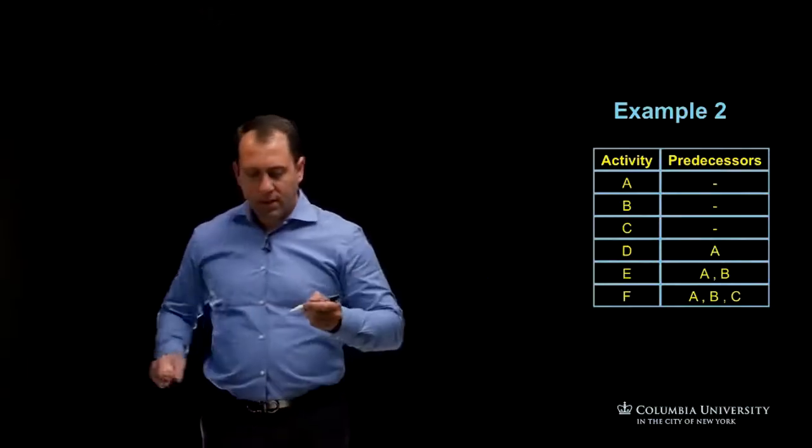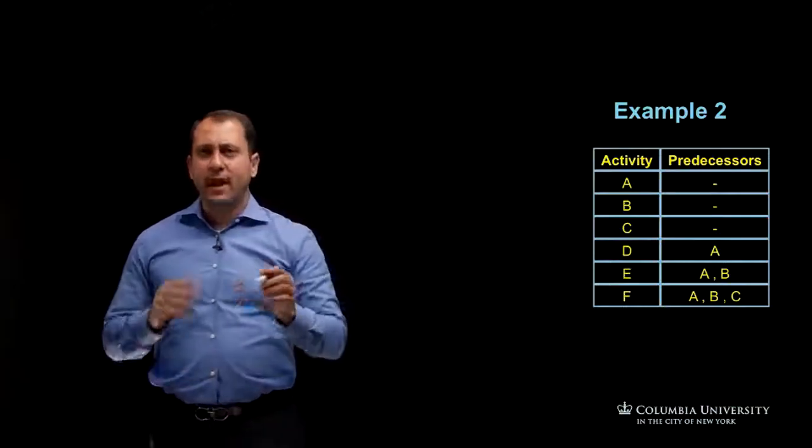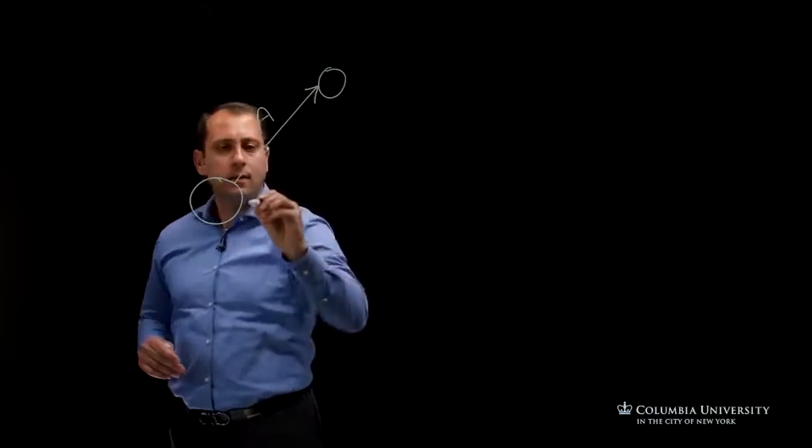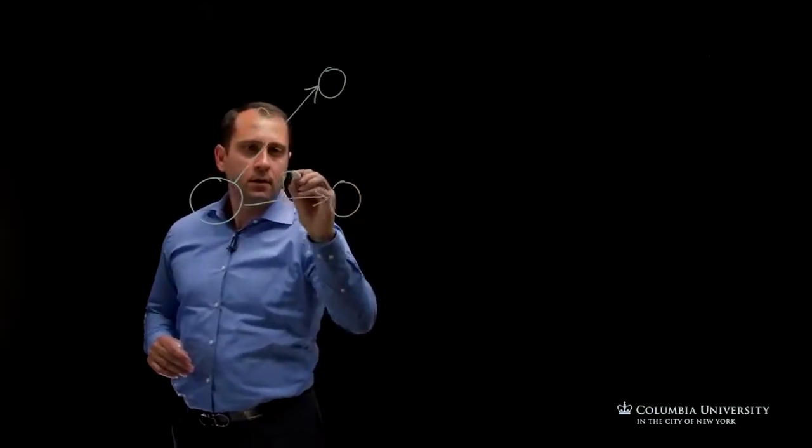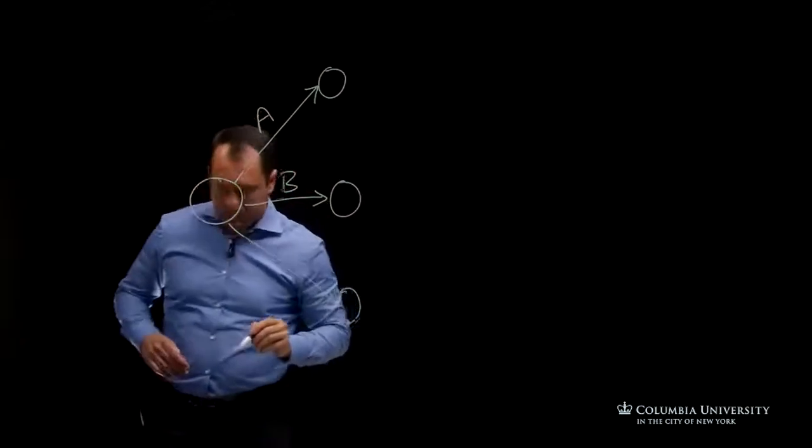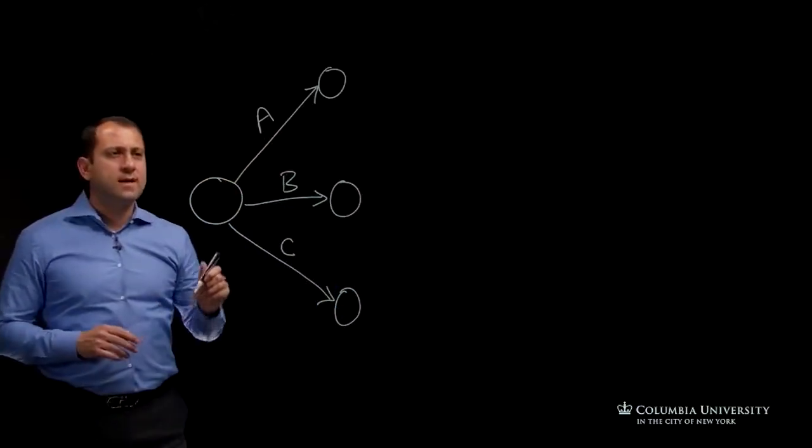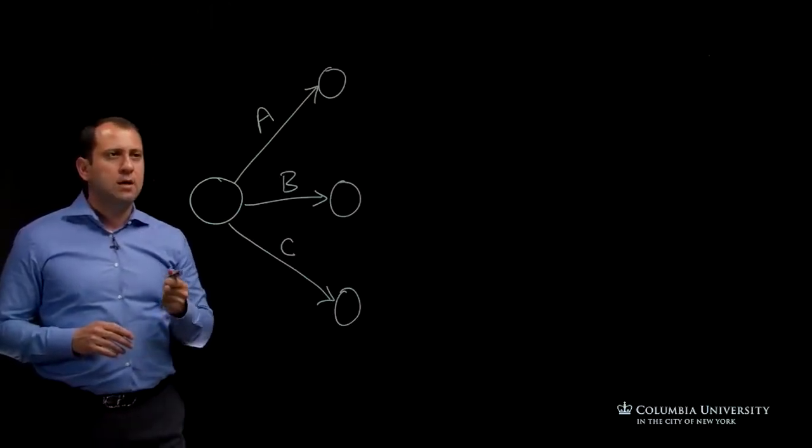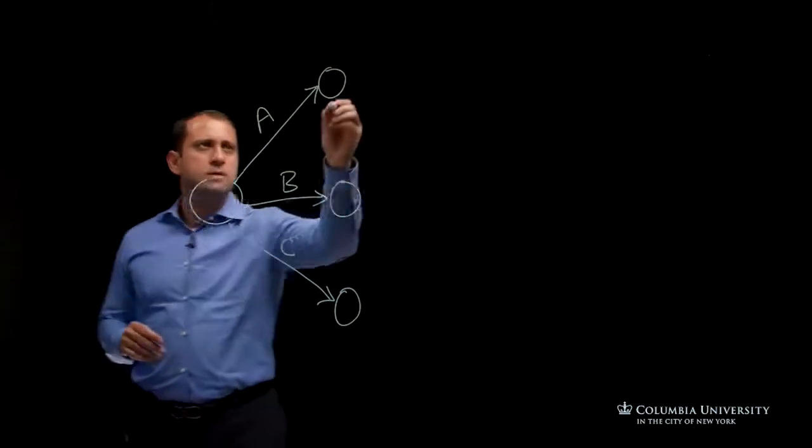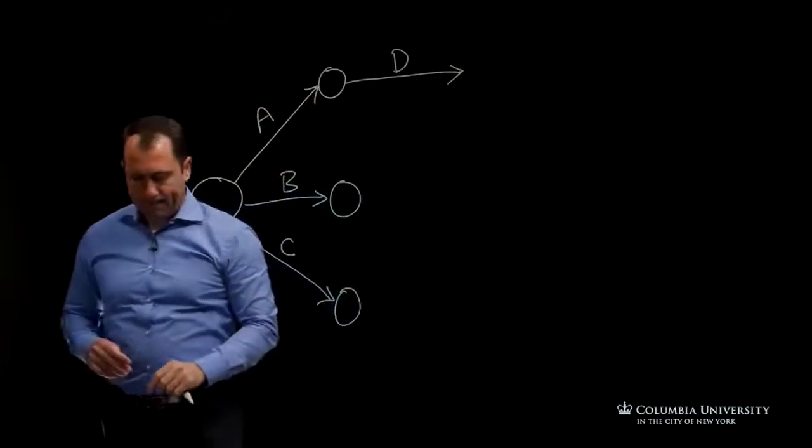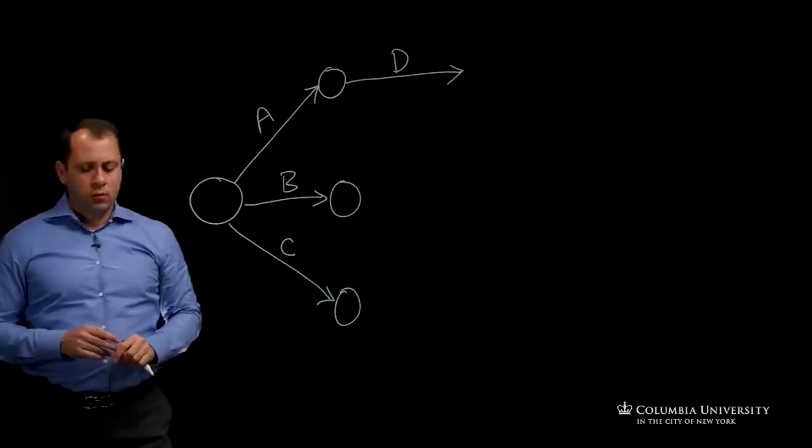We have the first three activities starting, so we can share the same node and we have activity A, activity B, and activity C. Then it says here in the example we have activity D. The predecessor is A, so we can just have an arrow with D.